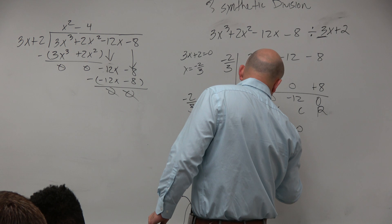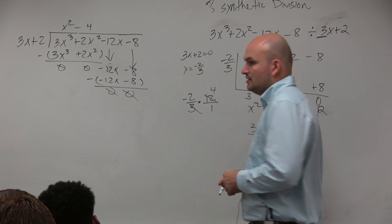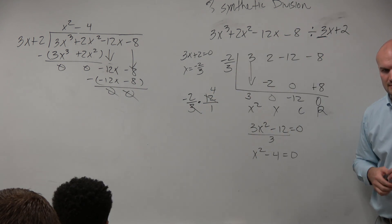So all we need to do to get to our correct answer is just divide by 3, and we're left with x squared minus 4 equals 0, and then we're good to go.